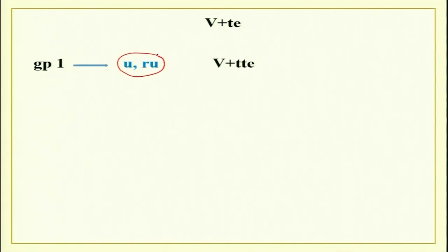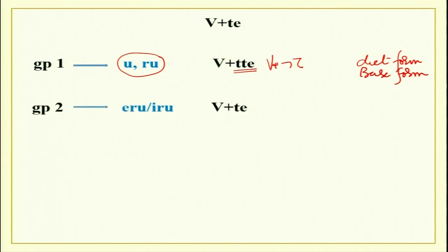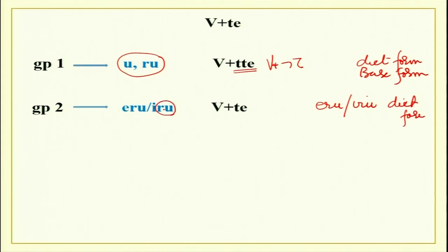Now let us see how the te form is made for all three verb groups. For Group 1 — verbs with u-row endings — remove the dictionary form ending and add tte (double sound). For Group 2 — verbs ending in eru or iru — remove the ru and add just te (single sound, not double). The distinction between double tte and single te is important.